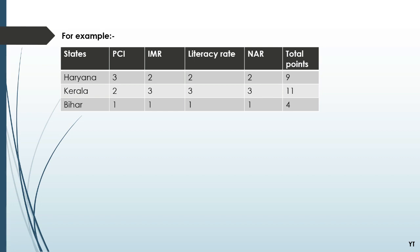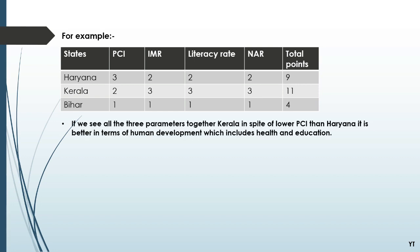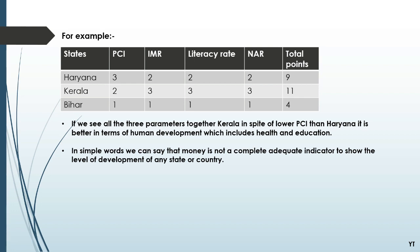Now let's add all the points together to get the final total. After comparing the three states based on per capita income, health, and education, we can see that Kerala, in spite of lower per capita income than Haryana, is better in terms of human development, which includes health and education. In simple words, money is not a complete indicator to show the level of development of any state or country.